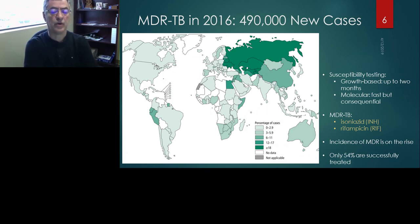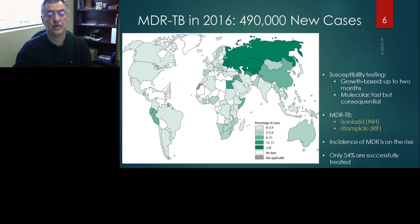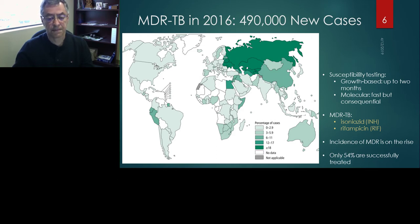Among all those reasons why this pathogen is so successful, I wanted to talk about resistance. The first category is called multi-drug resistance — that's when the bacterium becomes resistant to the two most powerful first-line drugs: isoniazid and rifampicin. In 2016, 490,000 new cases of MDR-TB were diagnosed. Unfortunately, the treatment success for this variety of the disease is about 50%.